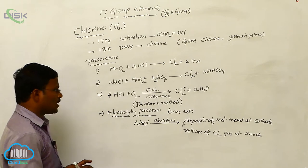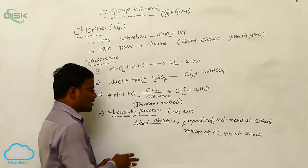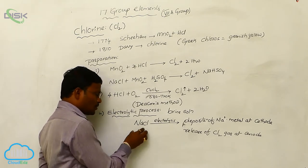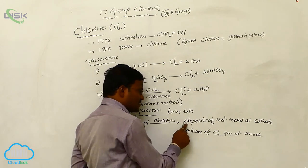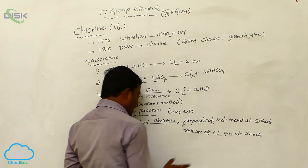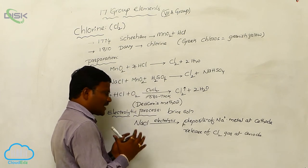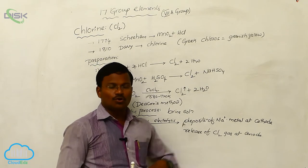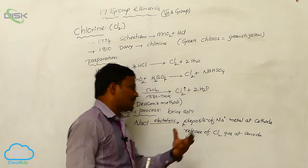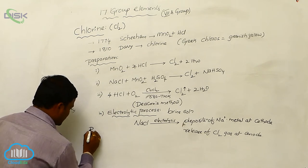During electrolysis or electrolytic process of brine solution, that is sodium chloride solution, here sodium metal generally deposits onto cathode, whereas nearby anode, there is release of chlorine gas takes place. The released chlorine will be collected in closed containers. Let us have properties.